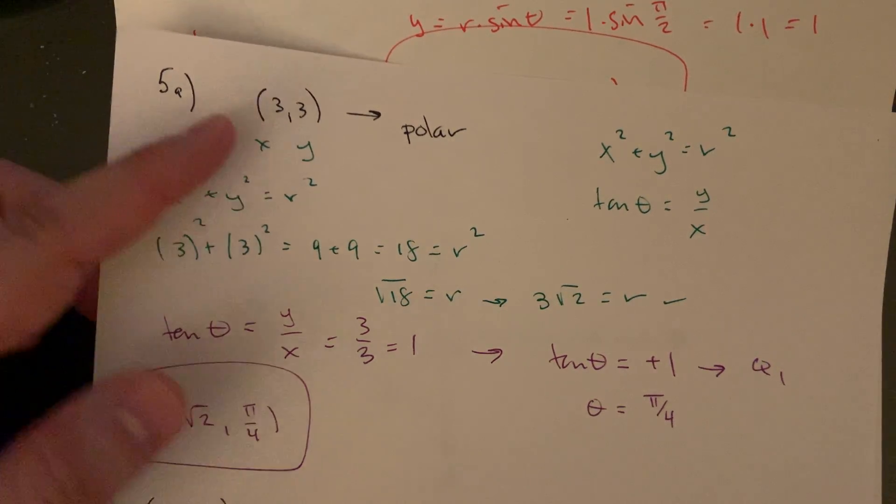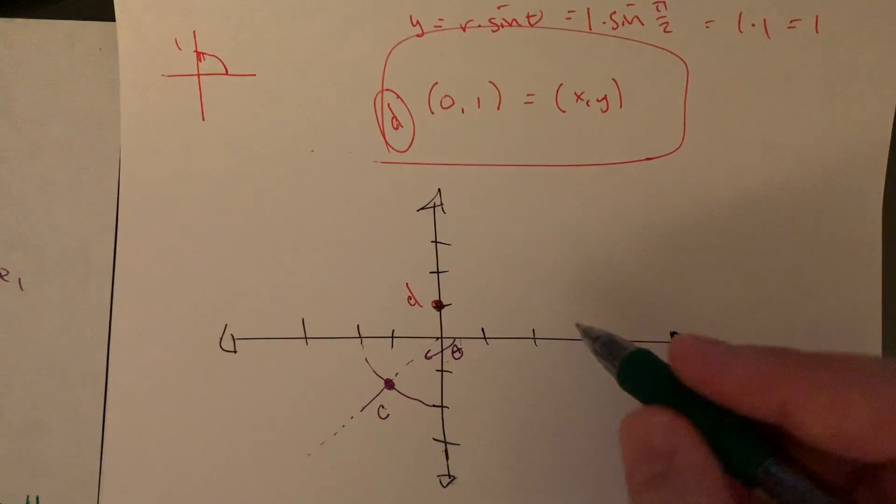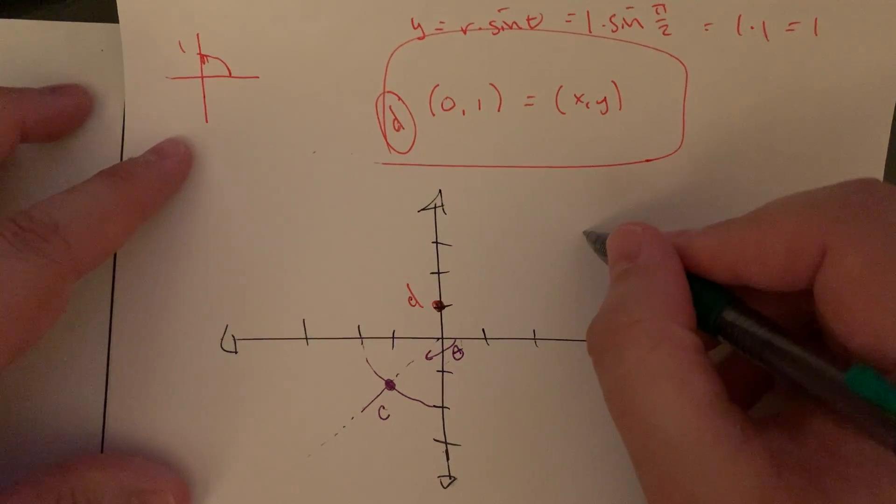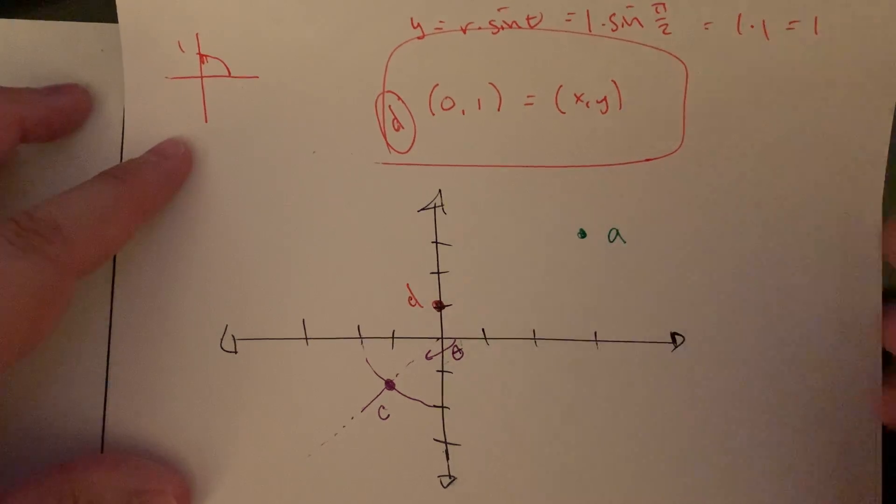So that's 1, 2, 3, and then up 1, 2, 3. So that was point A.